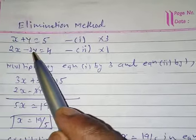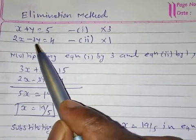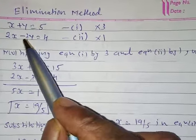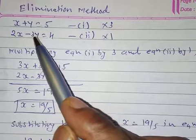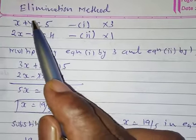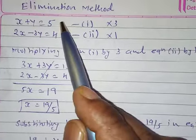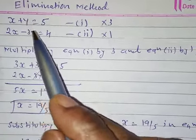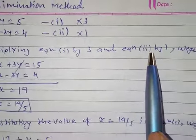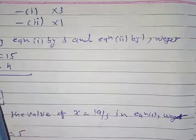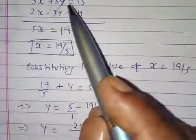To make the coefficient of y equal, multiply equation 1 by 3 and equation 2 by 1. Since the y terms have different signs, we decide to multiply equation 1 by 3 and equation 2 by 1. Multiplying, we get 3x plus 3y is equal to 15, and 2x minus 3y is equal to 4.